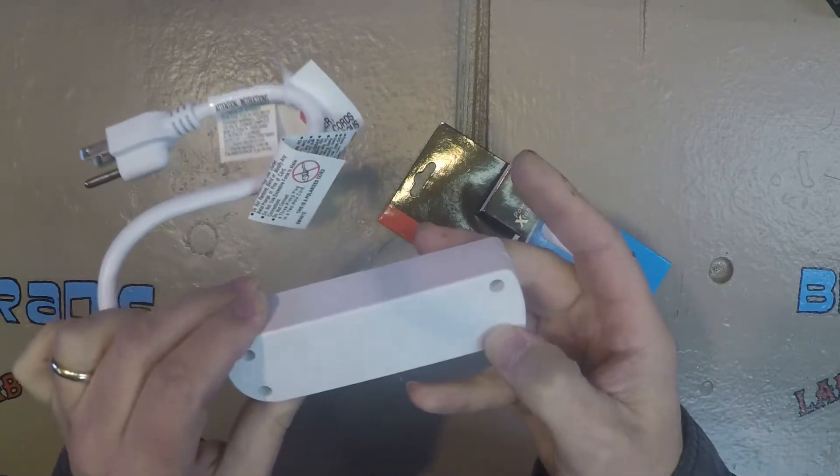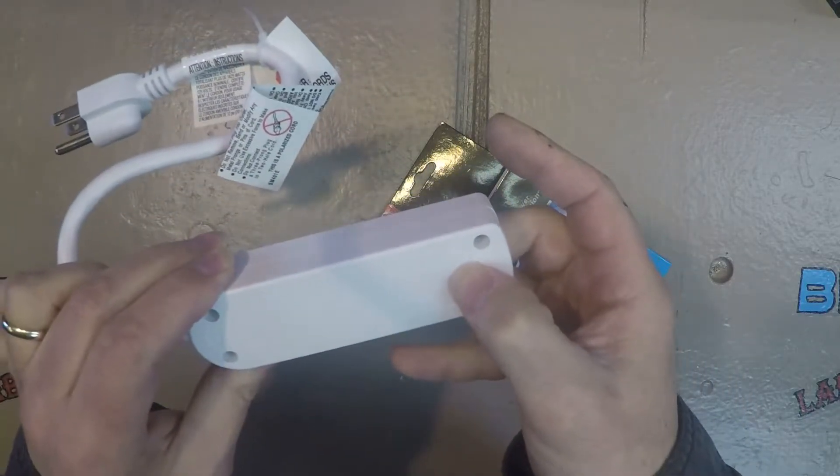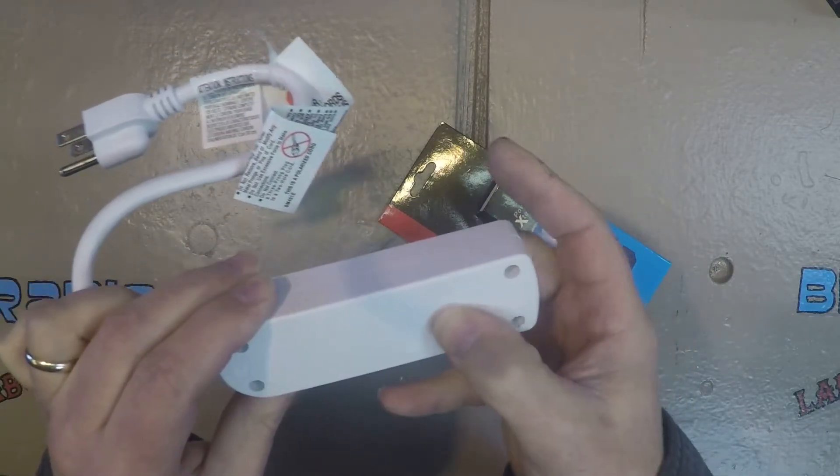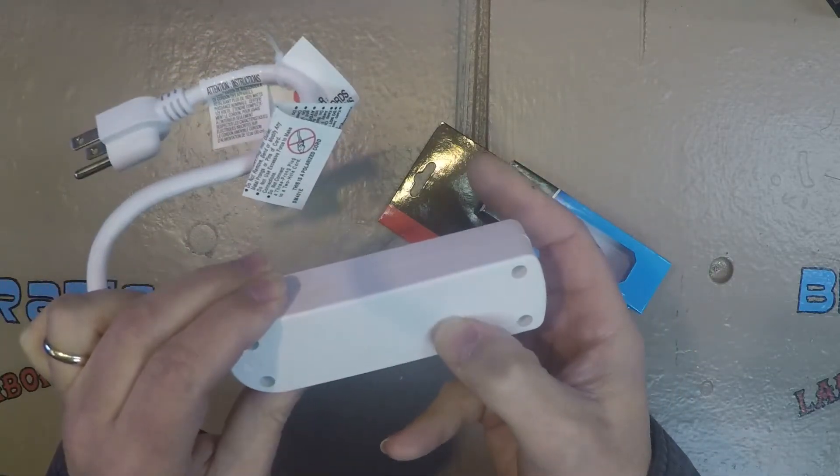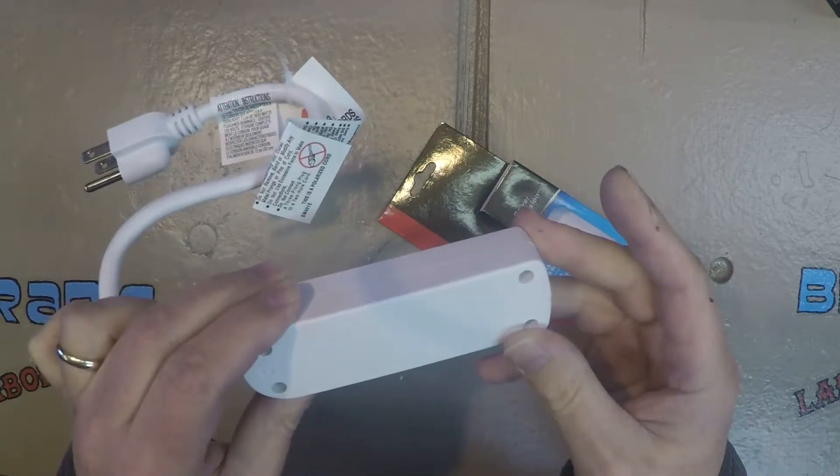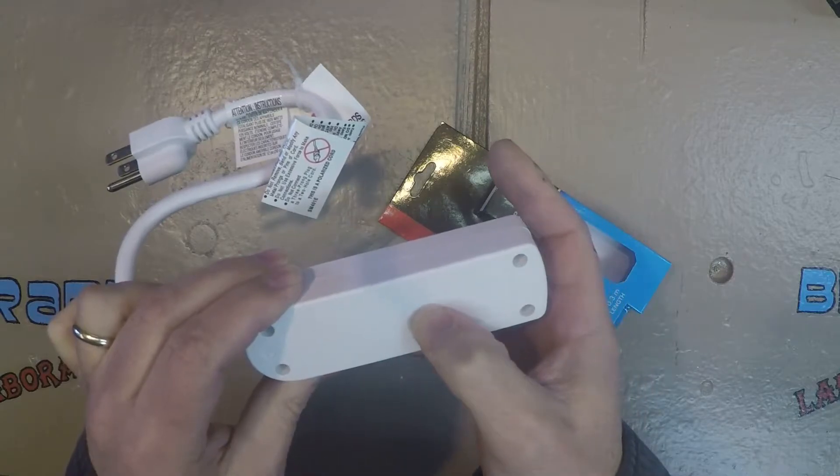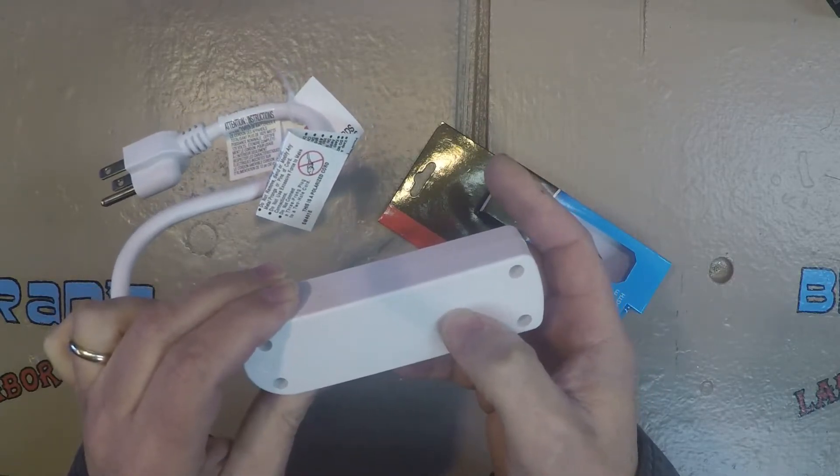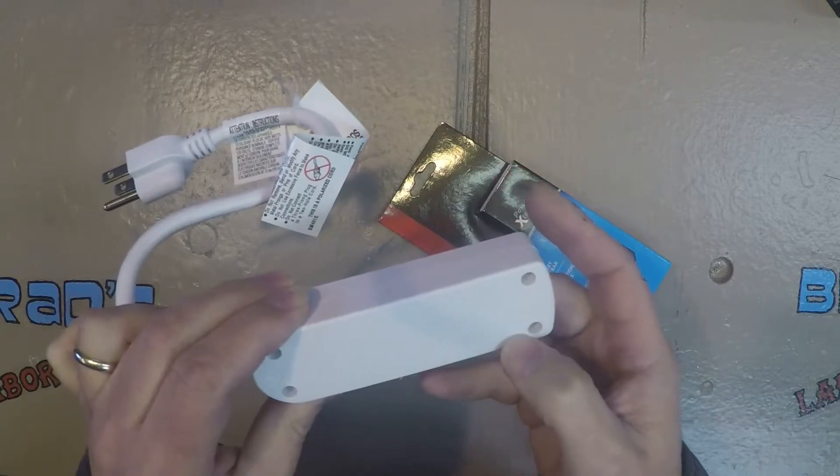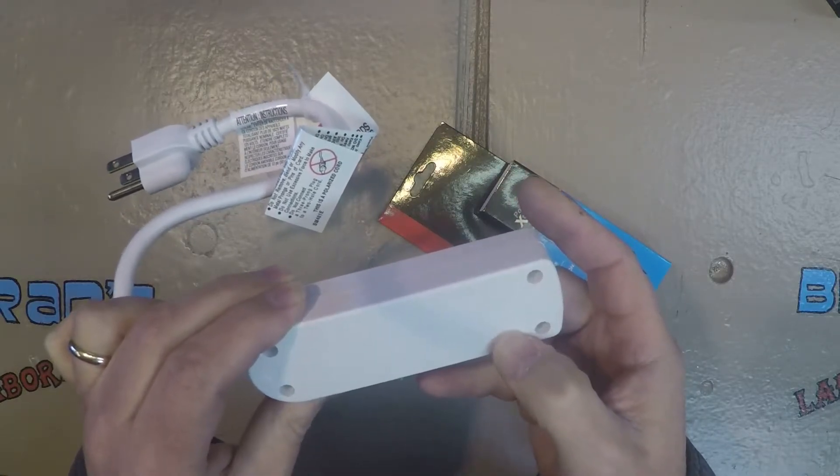So no UL listing and just an ETL. Model FL-122. 16 gauge wire times three conductors. 13 amps, 125 volt AC, 1625 watts, 60 Hertz. Made in China.